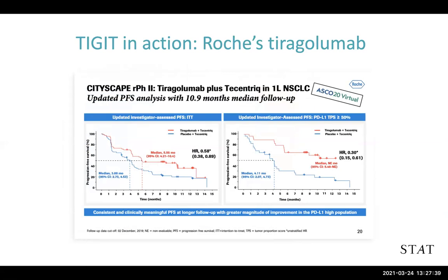And again, this is a randomized study, so we get the most convincing data from a randomized controlled design. The level of credibility with these data is a lot higher. Some questions that have been raised include whether the Tecentriq-alone control arm underperformed what you would have seen in other previously conducted Tecentriq studies, and whether that skewed the response rate artificially high in the combination arm. The only way we will know is when the Phase 3 study reads out.